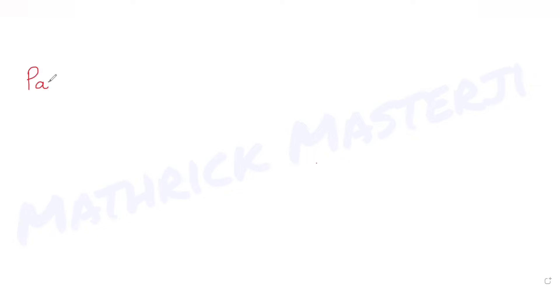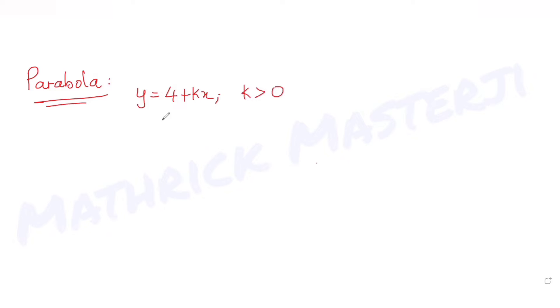Today's question is from the topic of parabola. The question tells us that if a line y equals 4 plus kx, where k is greater than zero, is tangent to a parabola whose equation is y equals x minus x squared, at the point P.